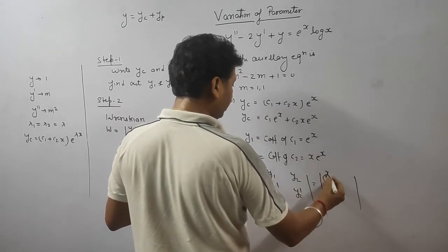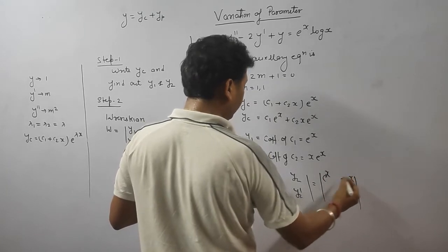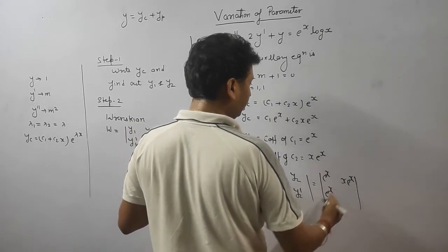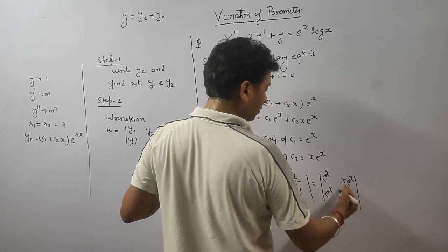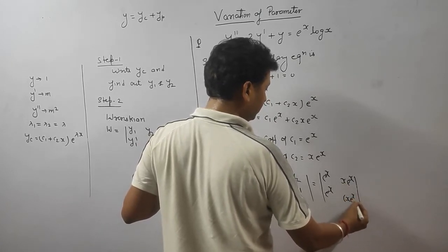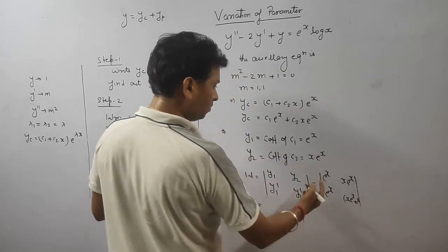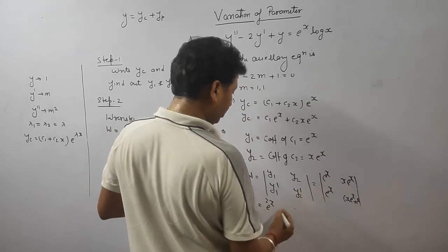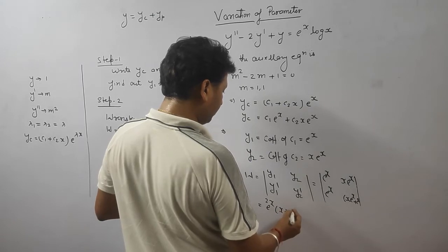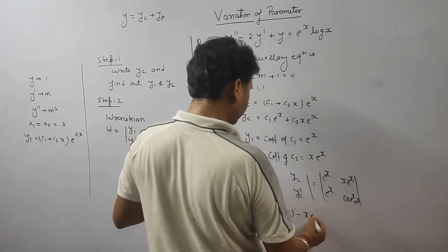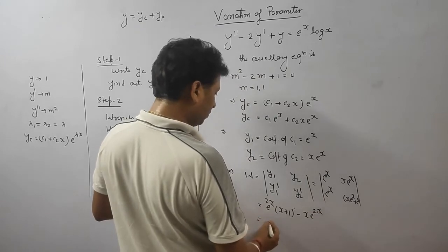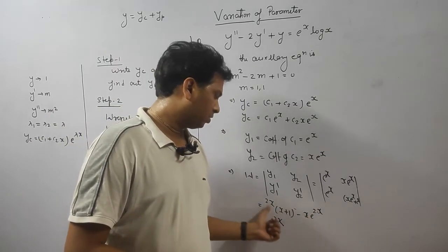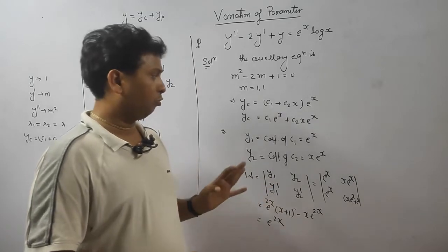Put in the values: y1 is e to the power x, y2 is x·e to the power x, y1 dash is e to the power x, and y2 dash is the differentiation of x·e to the power x, which equals x·e to the power x plus e to the power x. The Wronskian evaluates to e to the power x times (x·e to the power x plus e to the power x) minus x·e to the power x times e to the power x. The x·e to the power 2x terms cancel, giving W equals e to the power 2x.